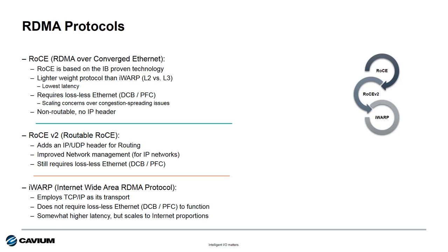RoCEv2, also known as Routable RoCE, adds IP and UDP headers to each packet, making them routable across multiple subnets. But again, the scalability issues inherent to converged Ethernet still apply.